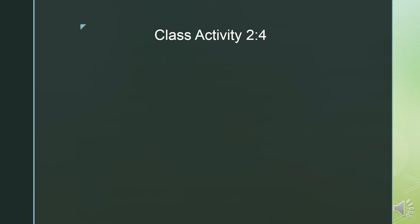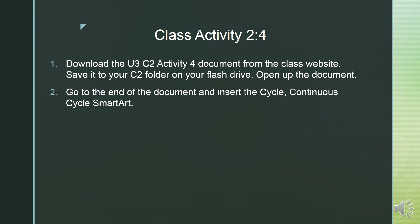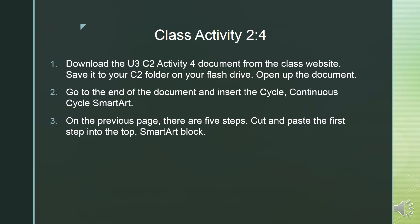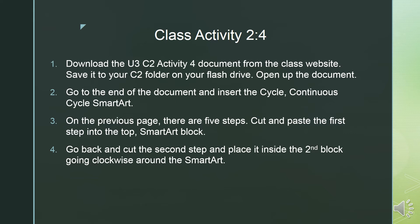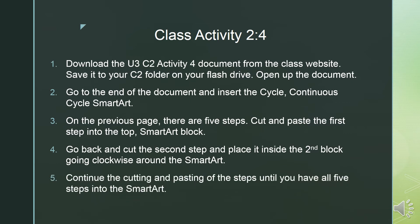Congratulations, you have just finished Part 4. Download the Unit 3 Chapter 2 Activity 2 document from the class website and save it to your Chapter 2 folder on your flash drive. Open up the document, go to the end of the document, and insert the Cycle Continuous Cycle SmartArt. On the previous page there are five steps. Cut and paste the first step into the top SmartArt block, then go back and cut the second step and place it inside the second block going clockwise around the SmartArt. Continue cutting and pasting the steps until you have all five steps in SmartArt.